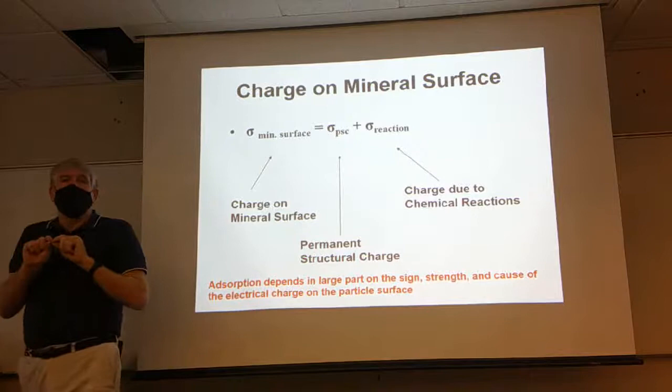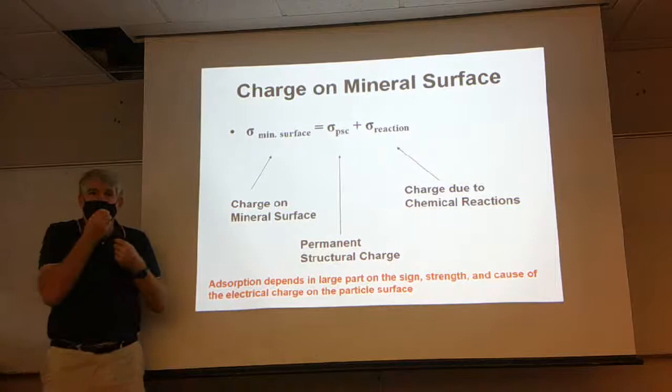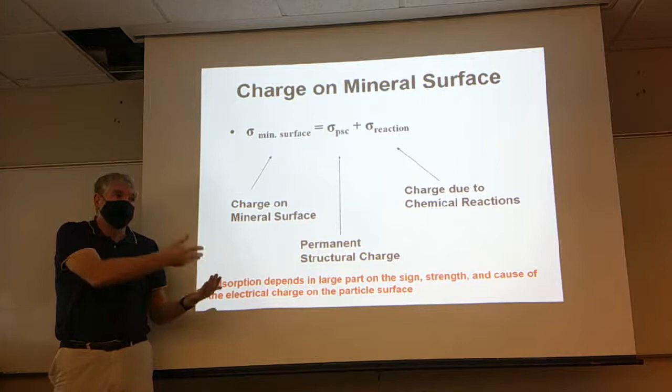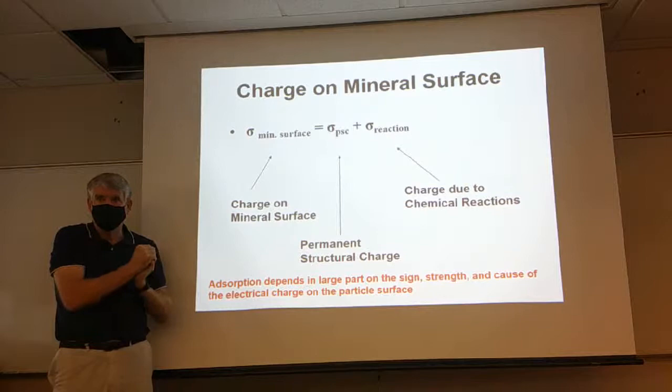There are only certain substances that actually have a really strong negative or positive charge on the mineral surface — those are the chemically reactive constituents. This is important because it varies with the conditions in the water itself, and so we might get things that in one set of solution conditions attract positive ions, and in another set of conditions attract anions — it'll switch.